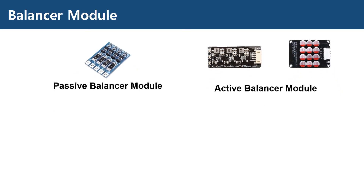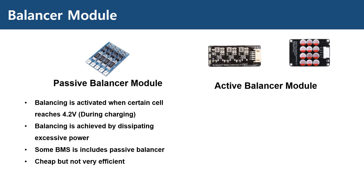The passive balancer is activated when a certain cell reaches full capacity, 4.2 volts. It dissipates the excessive power of that fully charged cell through the resistors to achieve balancing. You can also find a BMS equipped with a passive balancer. It is cheap in price, but not very efficient, since it dissipates the excessive power during charging.